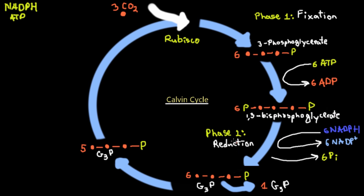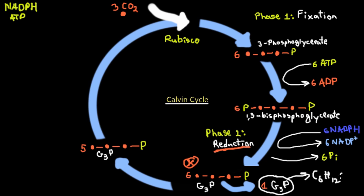Next is phase two, the reduction stage. 1,3-bisphosphoglycerate gains electrons from NADPH — six molecules of 1,3-bisphosphoglycerate are reduced by six molecules of NADPH, releasing phosphate, to produce six G3P molecules. Because we produce six G3P molecules, one is in excess and goes on to produce our organic compounds such as glucose (C6H12O6). The three-carbon G3P is the substrate used to produce all kinds of organic compounds.